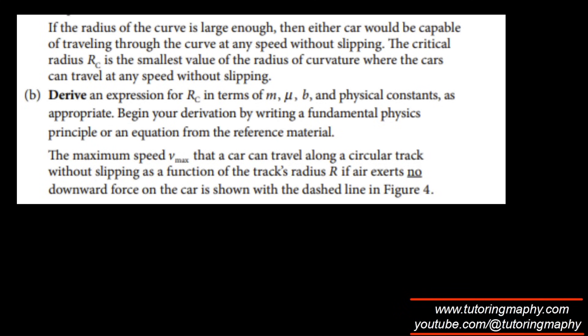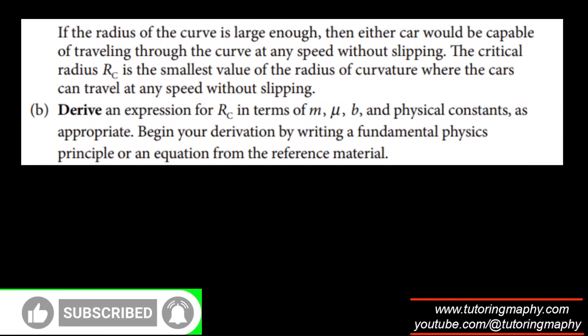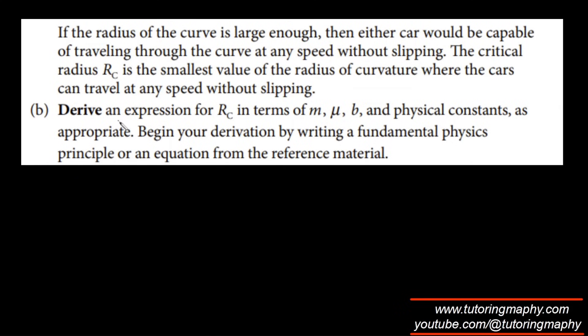Part B. If the radius of the curve is large enough, then either car would be capable of traveling through the curve at any speed without slipping. The critical radius R_C is the smallest value of the radius of curvature where the cars can travel at any speed without slipping. Derive an expression for R_C in terms of m, μ, b, and physical constants as appropriate. Begin your derivation by writing a fundamental physics principle. You might think that you can get R_C in terms of all this, but it will have V as well. But let me do it for you. Then you will understand.